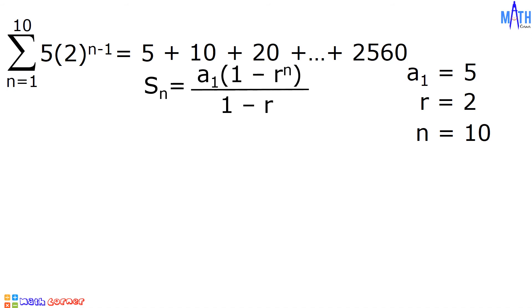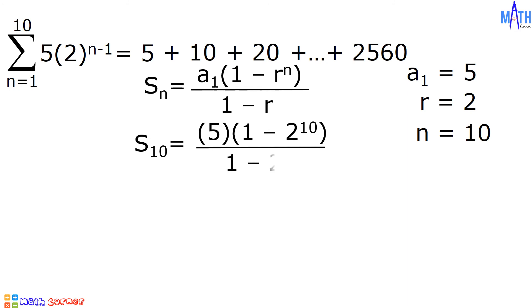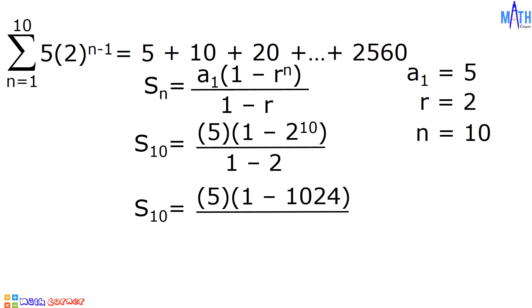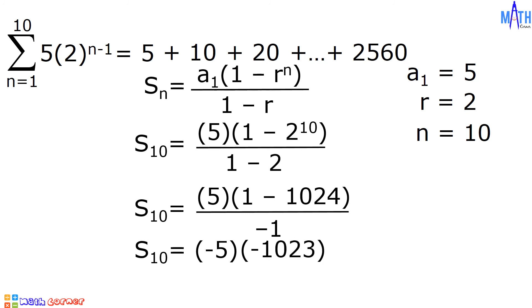Let us substitute all these values to the formula. S sub n becomes S sub 10. S sub n equals a sub 1, which is 5, times the quantity 1 minus r raised to n, which is 2 raised to 10, divided by 1 minus 2. Let us simplify. We have S sub 10 is equal to 5 times the quantity 1 minus 2 raised to 10, which equals 1024, all over 1 minus 2, which equals negative 1. Dividing 5 by negative 1 gives negative 5, so S sub 10 is equal to negative 5 times 1 minus 1024, which is negative 1023. Negative 5 times negative 1023 gives a positive answer of 5,115.